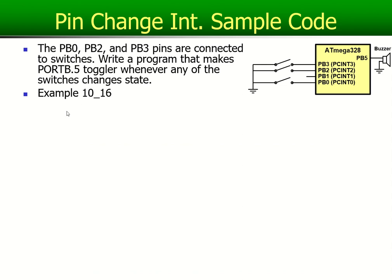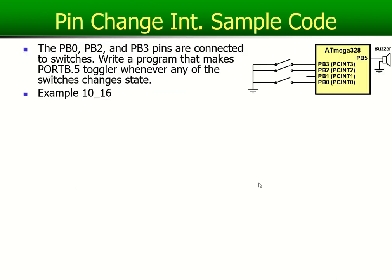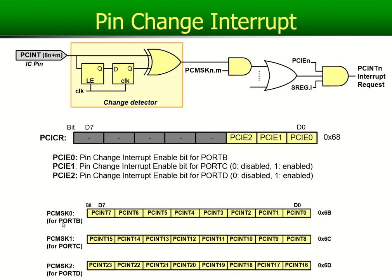Here's an example. I will explain it in the next video — example 10-16. It says PB0, PB2, and PB3 are connected to switches, so that's an input. Write a program that makes PB5 toggle whenever any of the switches change state. So we'll have to set up bits zero, two, and three on port B. I will make PCIE0 a one because that's on port B, and then for the pin change mask register, bit zero, bit two, and bit three will be made a one. This is how you set up for this specific arrangement.